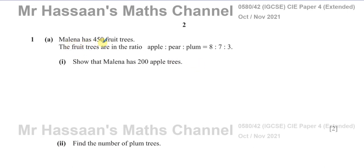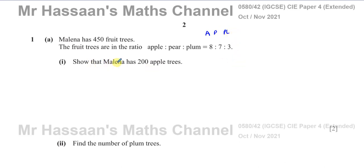It says: Molina has 450 fruit trees. The fruit trees are in the ratio apple to pear to plum, 8 to 7 to 3. So you have apple — 8 parts, pear — 7 parts, and plum — 3 parts. Show that Molina has 200 apple trees.